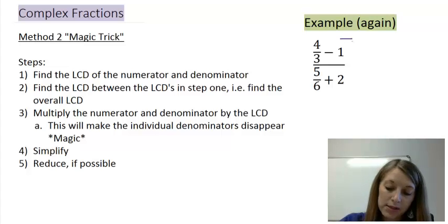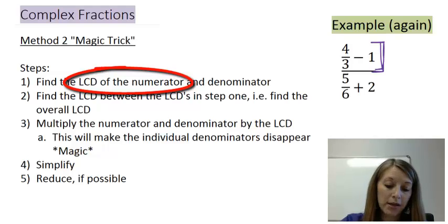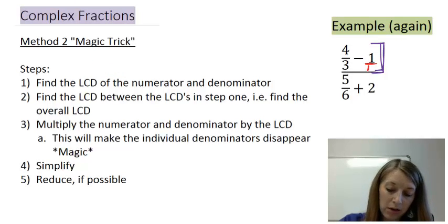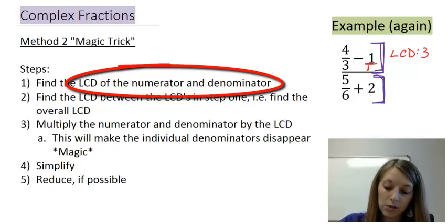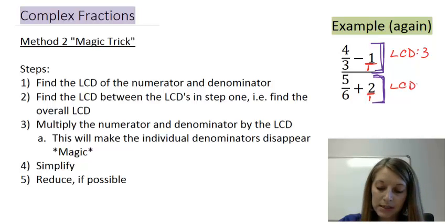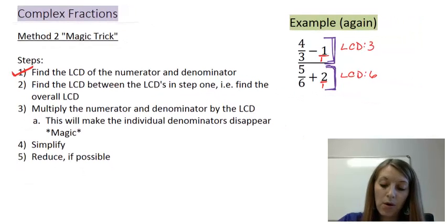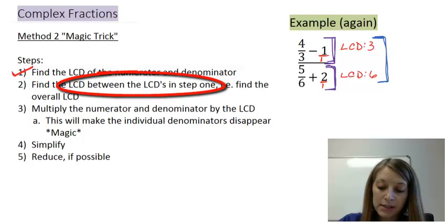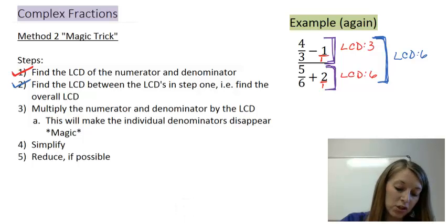Starting with the numerator: giving the whole number a denominator of 1, the LCD between 3 and 1 is 3. For the denominator: making 2 into two over one, the LCD between 6 and 1 is 6. That's step one done. Step two asks for an overall LCD — between 3 and 6, the overall LCD is 6, because both go into 6. So my overall LCD is 6, and step two is complete.